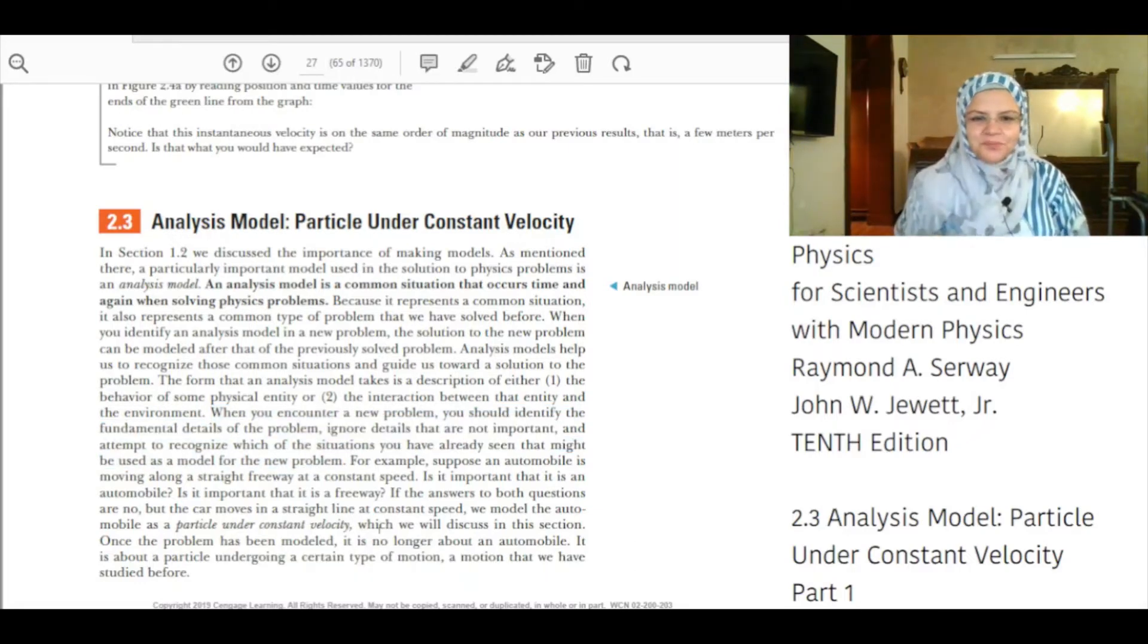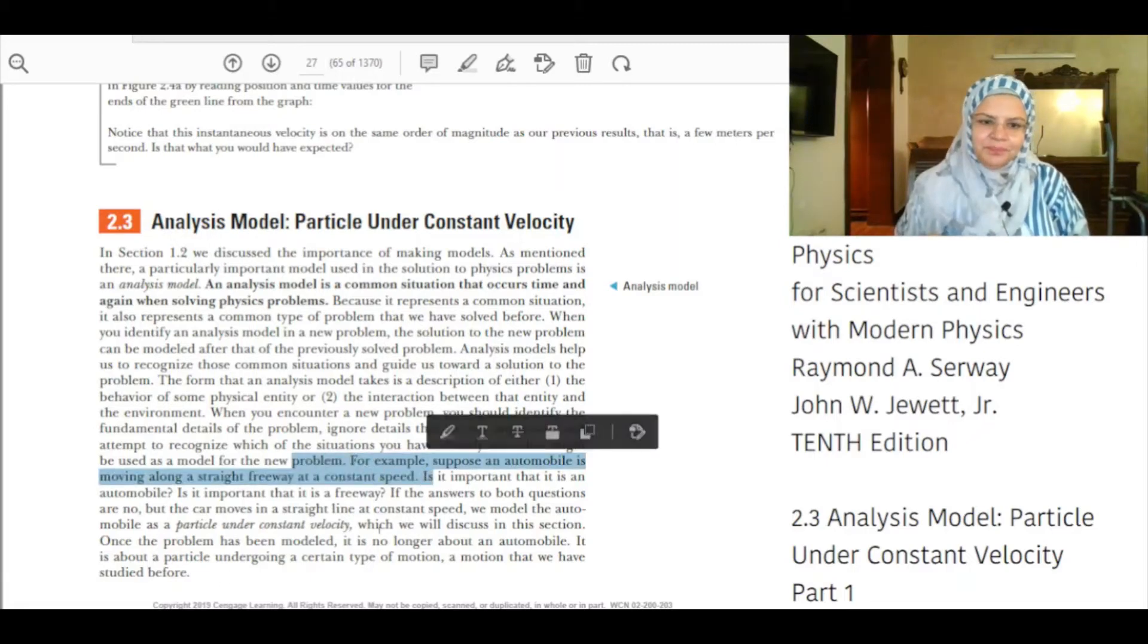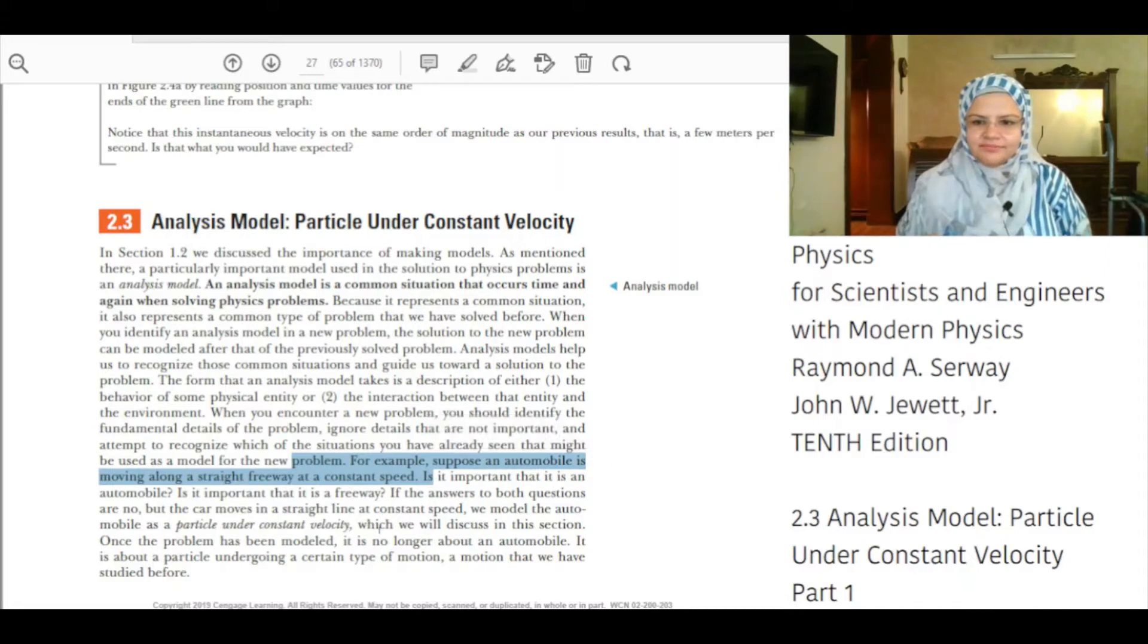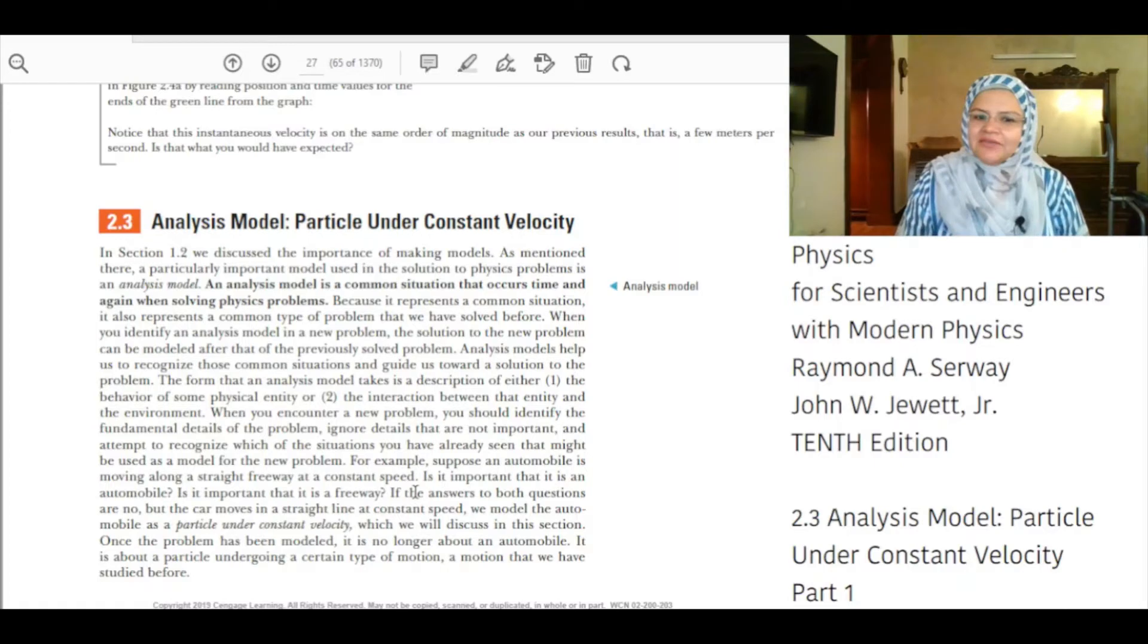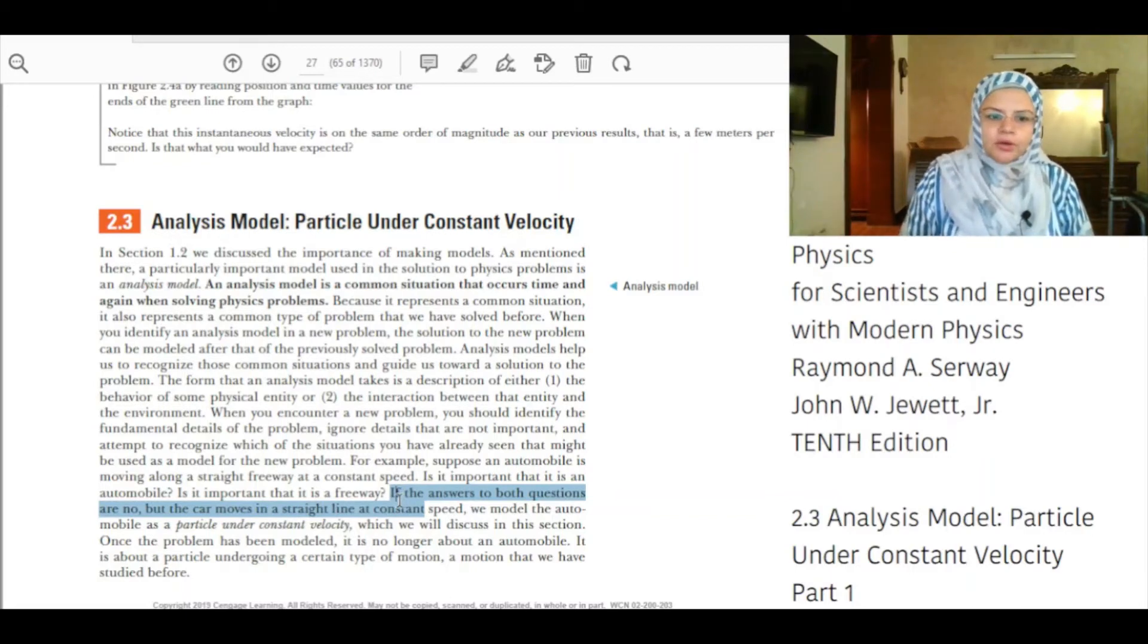For example, suppose an automobile is moving along a straight freeway at a constant speed. Is it important that it is an automobile? Is it important that it is a freeway? If the answer to both questions is no, but the car moves in a straight line at constant speed, we model the automobile as a particle under constant velocity, which we will discuss in this section.